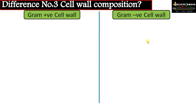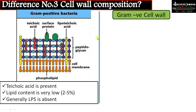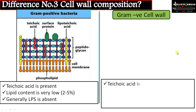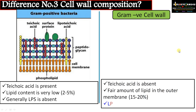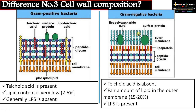Moving to the third difference regarding cell wall composition: in gram positive bacteria teichoic acid is present, lipid content is very low, and lipopolysaccharide is generally absent. Whereas in gram negative cell wall, teichoic acid is absent, there is a good amount of lipid at 15 to 20 percent, and a lipopolysaccharide outer layer is present.